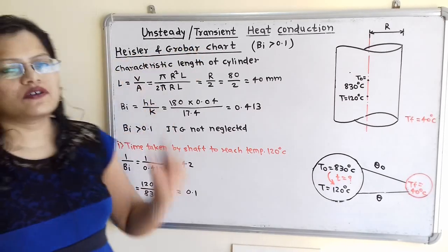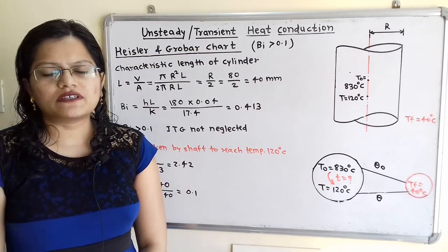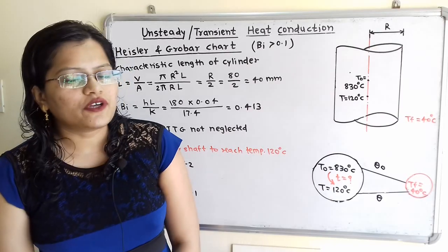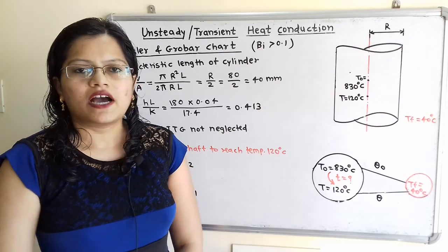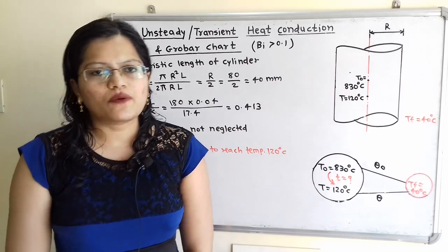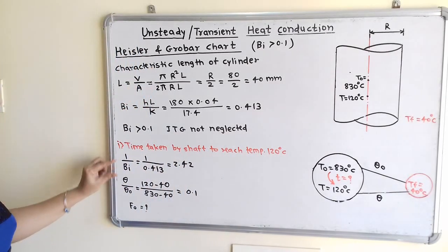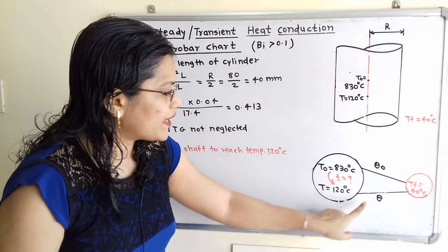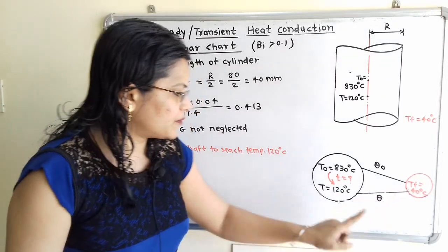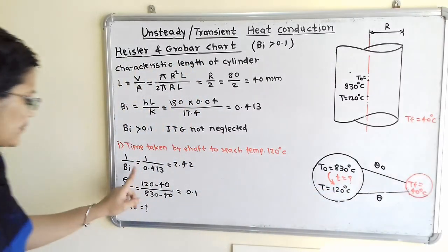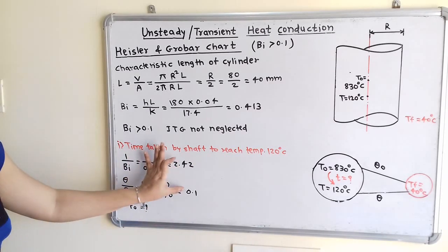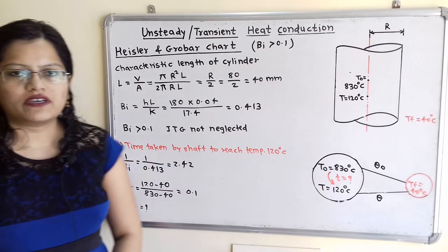From the Heisler and Grover chart, the Fourier number Fo = α·t / L² is obtained using two known values. We calculate theta/theta0 = (120 − 40) / (830 − 40) = 0.1, and 1/Bi = 2.42. With these two values known, we can read off the Fourier number from the chart.